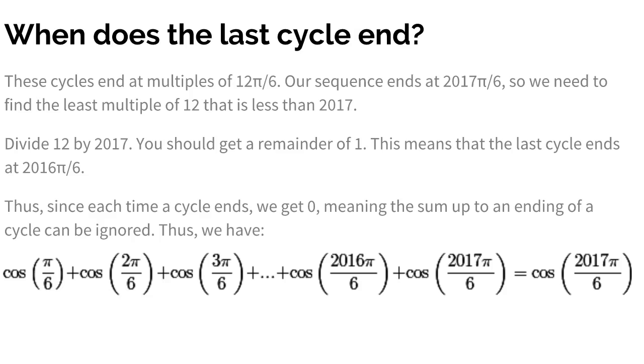So hopefully, after a bit of thought, you should understand that now. So all of this is 0, but we want to figure out cosine 2017π/6. So all of this is 0, that cancels out, and we're just left with cosine 2017π/6. So we just need to figure out this one term. We've gotten it down from 2017 terms, so the first 2016 terms cancel out to 0, and we just have to calculate the last term.